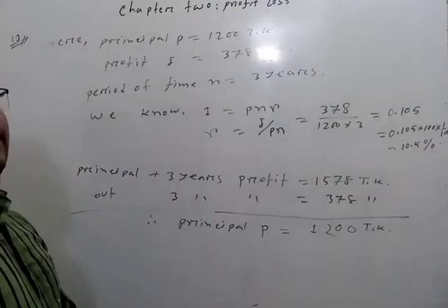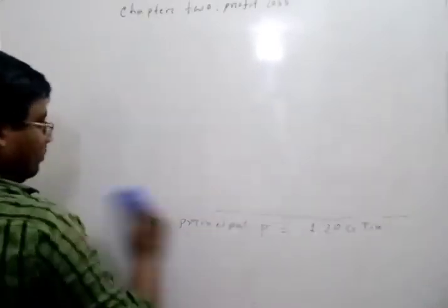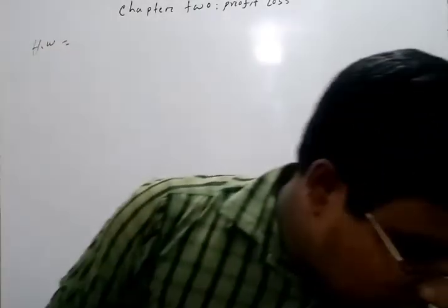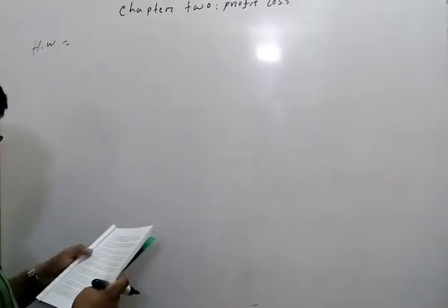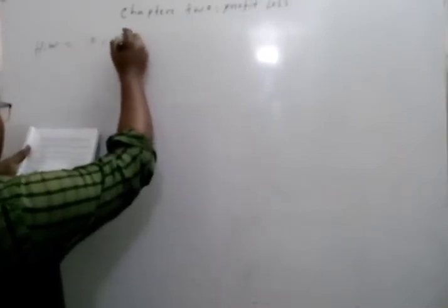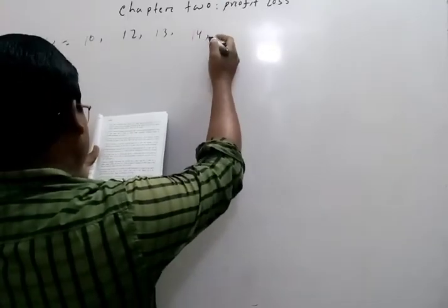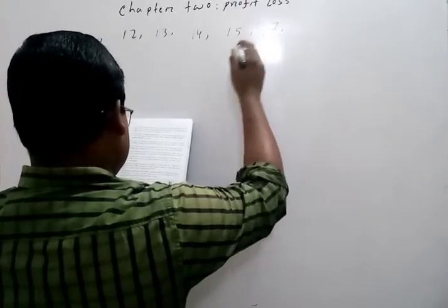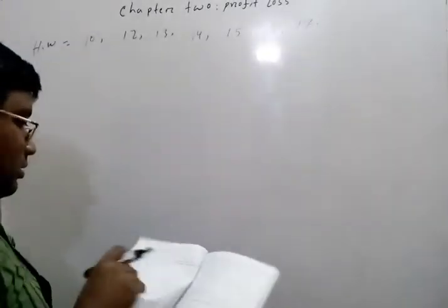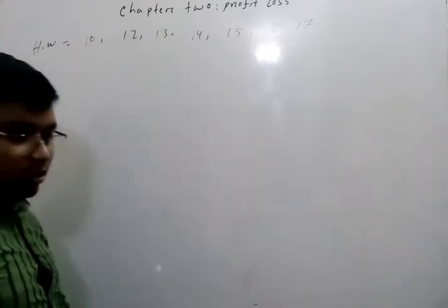And this, if you just take percentage here, you just write 0.105 into 100 into 1 by 100. And this hundred means ten point five, and one by hundred means percentage. Clear? And that's complete your answer. This is very simple or not? I think this is very simple. Clear? Okay my students. And your homework is on the side: Homework problems 10, 12, 13, 14, 15, 16, 17. Okay, these are your homeworks.